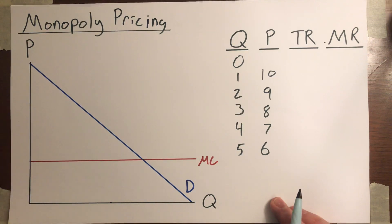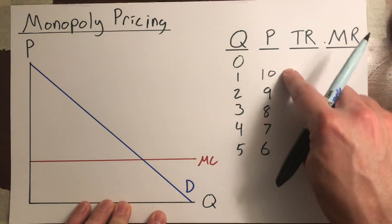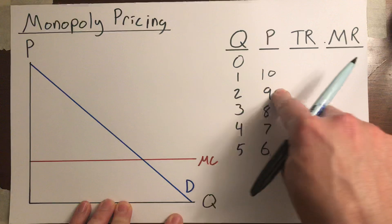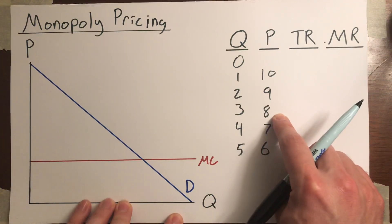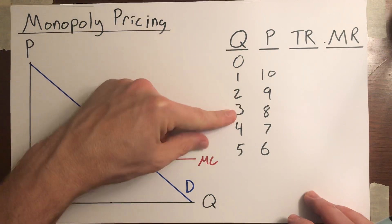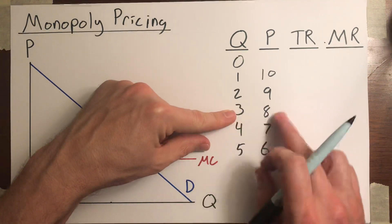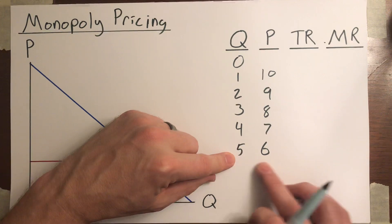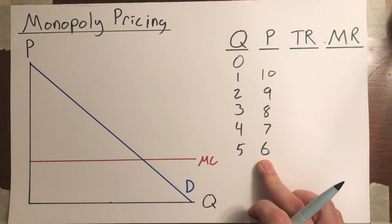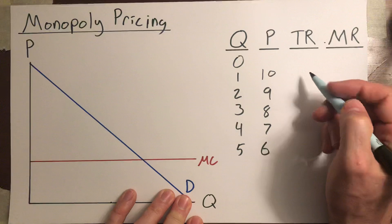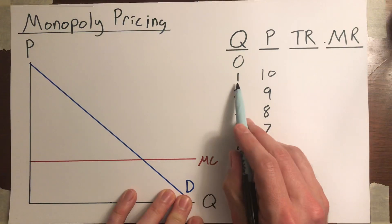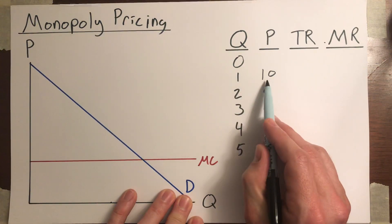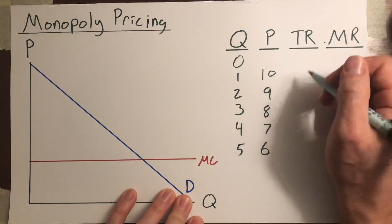Now, also keep in mind, we're assuming that the monopolist is charging a single price. So they can't sell the first one for $10 and then sell the second one for $9 and then sell the third one for $8. If they want to sell three units, they have to sell all three of them at a price of $8. If they want to sell five units, they have to sell all five of them at a price of $6. So what is their total revenue going to be? Well, it's just going to be the quantity of units they sell times the price. So we just multiply the numbers in these two columns.